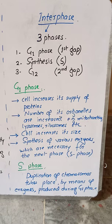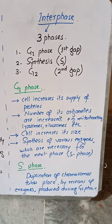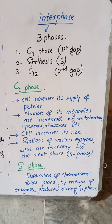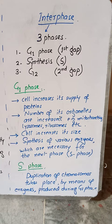During G1 phase, the cell increases its supply of proteins which will be utilized after cell division by each daughter cell. The number of organelles are also increased — for example mitochondria, lysosomes, ribosomes, etc. The cell also increases its size. This is because whenever a cell divides into two equal daughter cells, it is ensured that each daughter cell contains an equal amount of proteins.